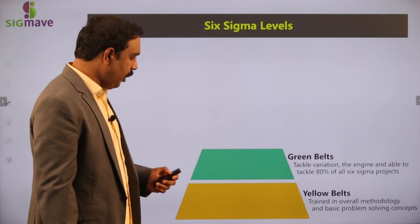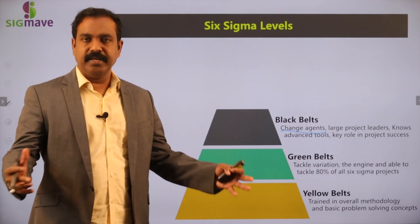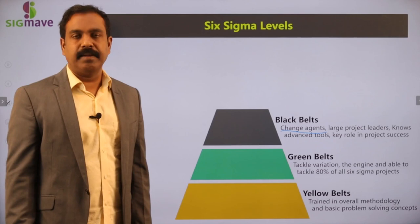Next is black belt. The difference between a black belt and green belt is that black belt is a change agent. He is a leader, a project leader, and he can manage two or three projects and identifies opportunities. Black belt also knows some advanced statistical tools.